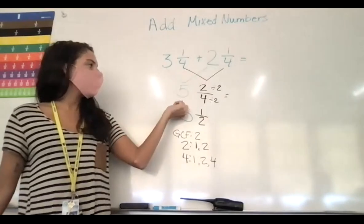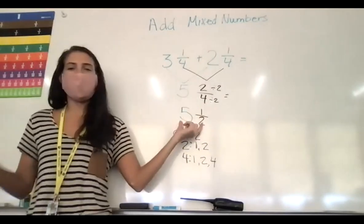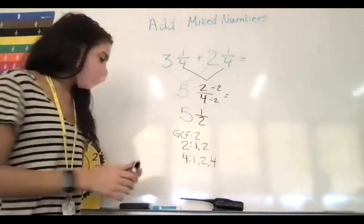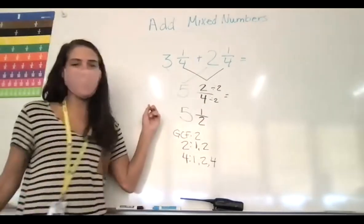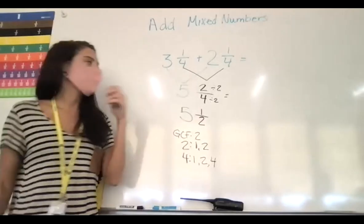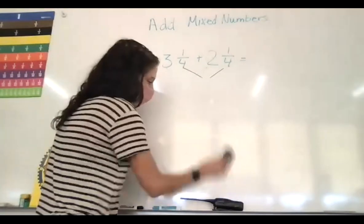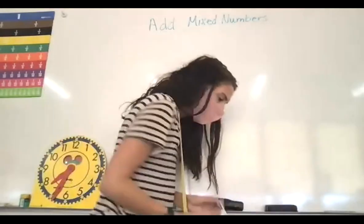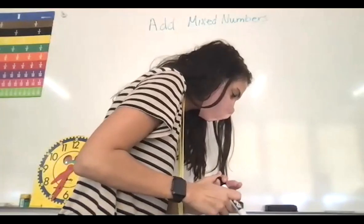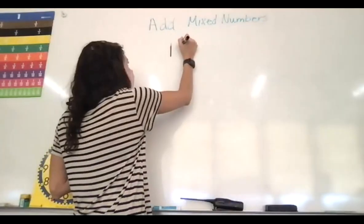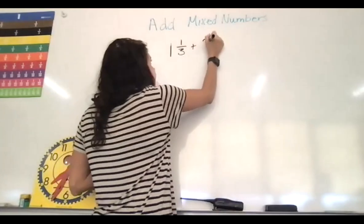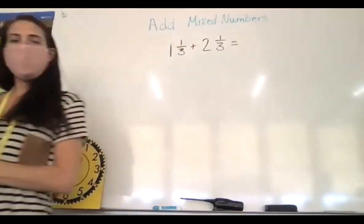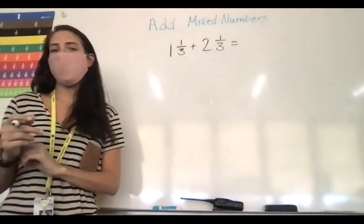So we are adding whole numbers, adding fractions, and then simplifying. Let's try another one: 1 and 1 third plus 2 and 1 third.